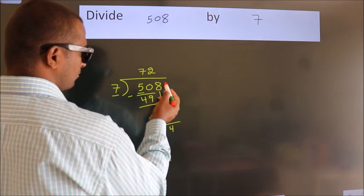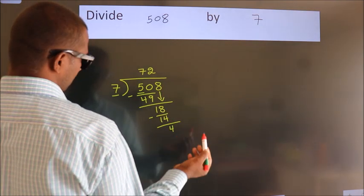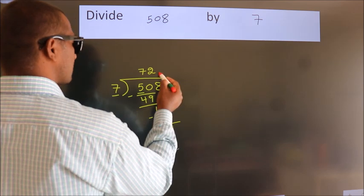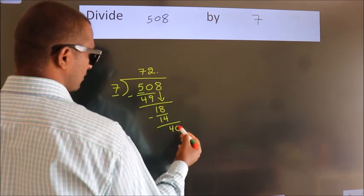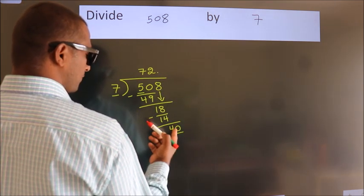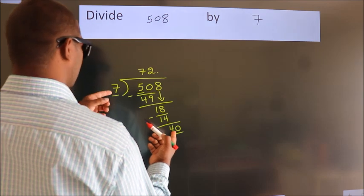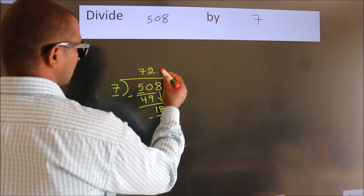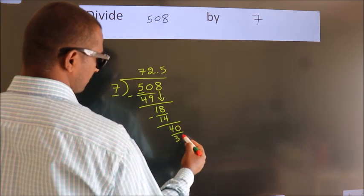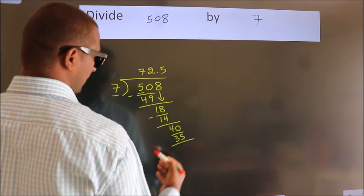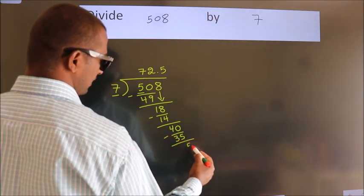After this, no more numbers to bring down. So what we should do is put a dot and take 0. So, 40. A number close to 40 in the 7 table is 7 times 5 equals 35. Now we subtract. We get 5.